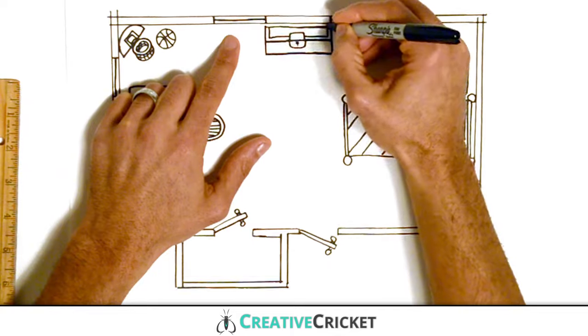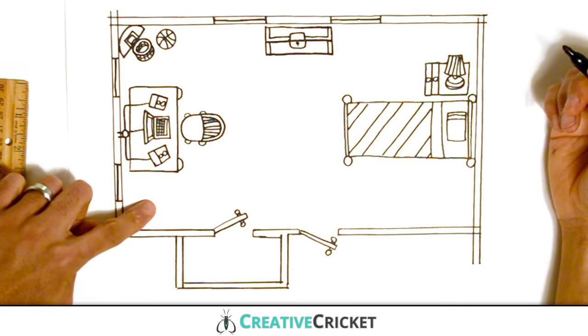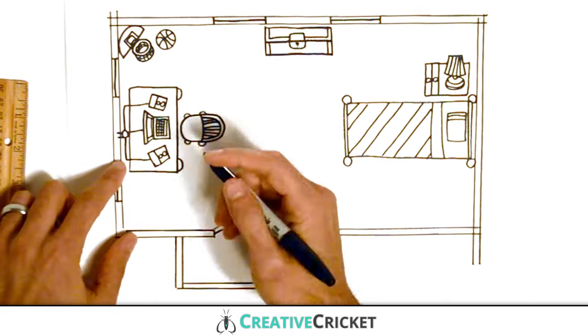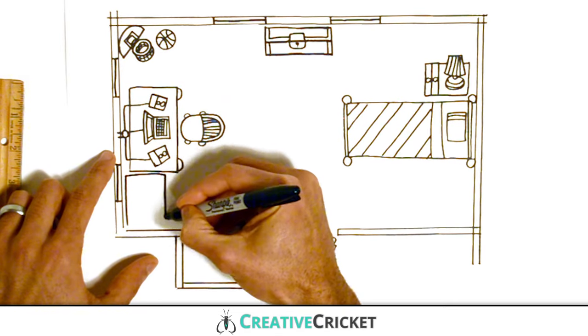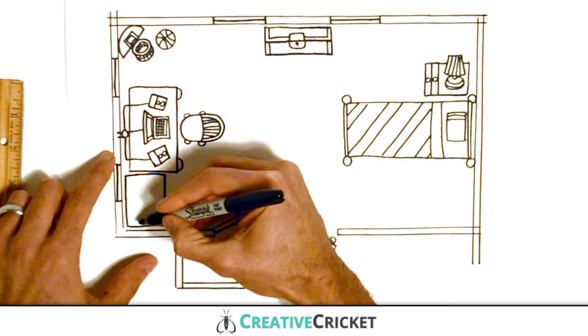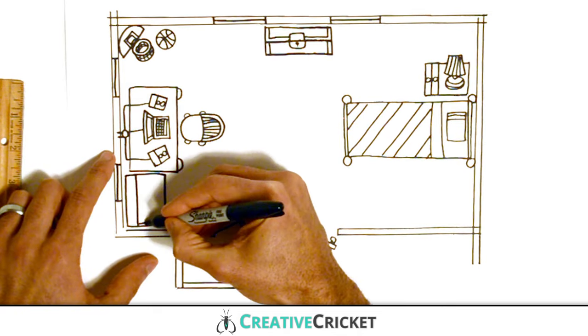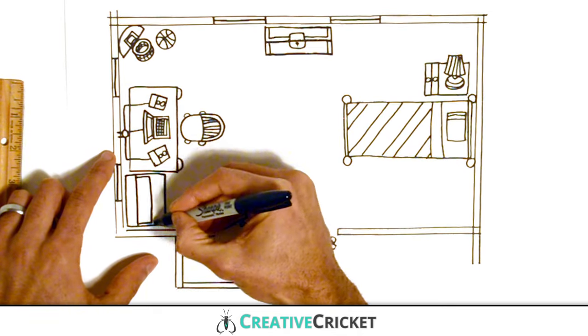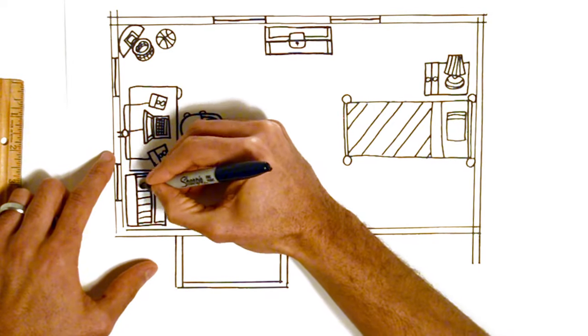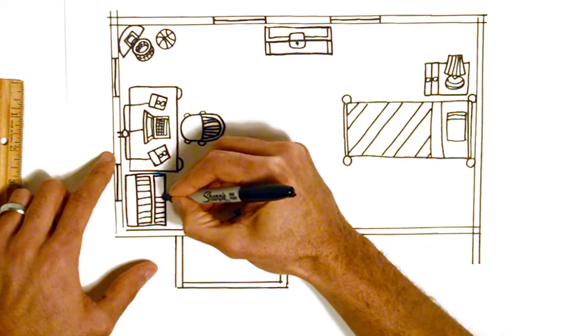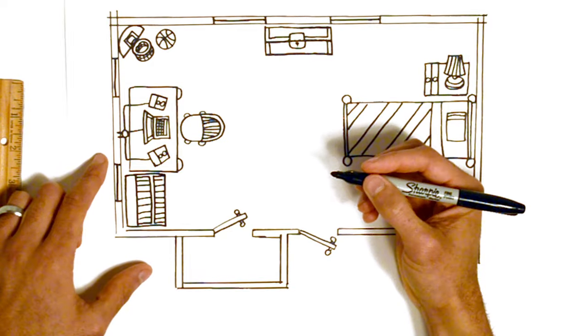On the other side of the computer desk I'll draw a bookshelf. Here's where I keep all my favorite books: books from school, comics, and other cool books I enjoy reading. Again, normally we wouldn't be able to see the books from above, but I'll draw them in anyway so we can see what it is.